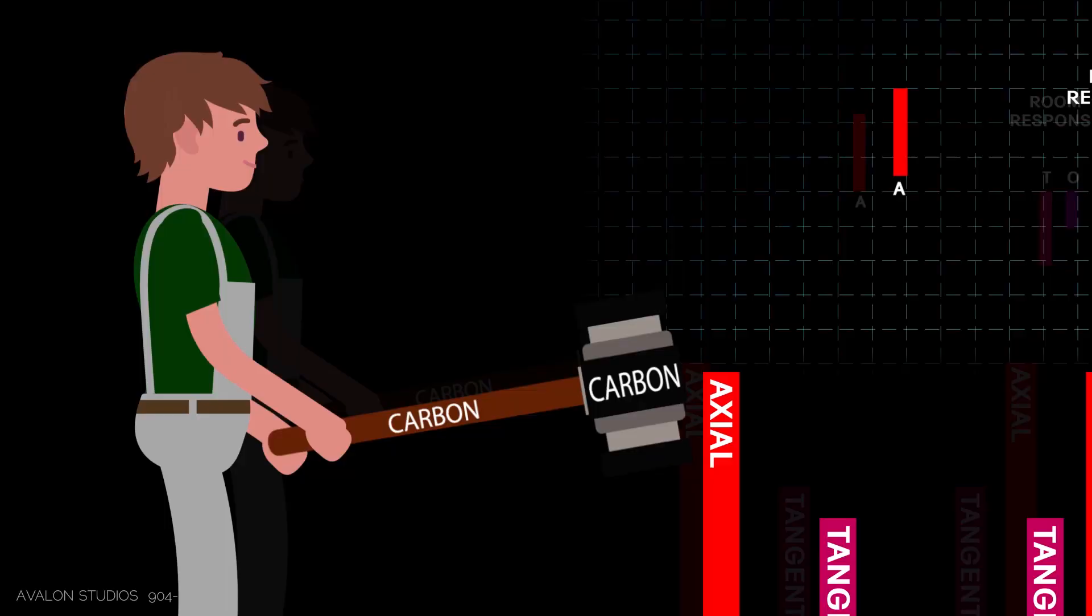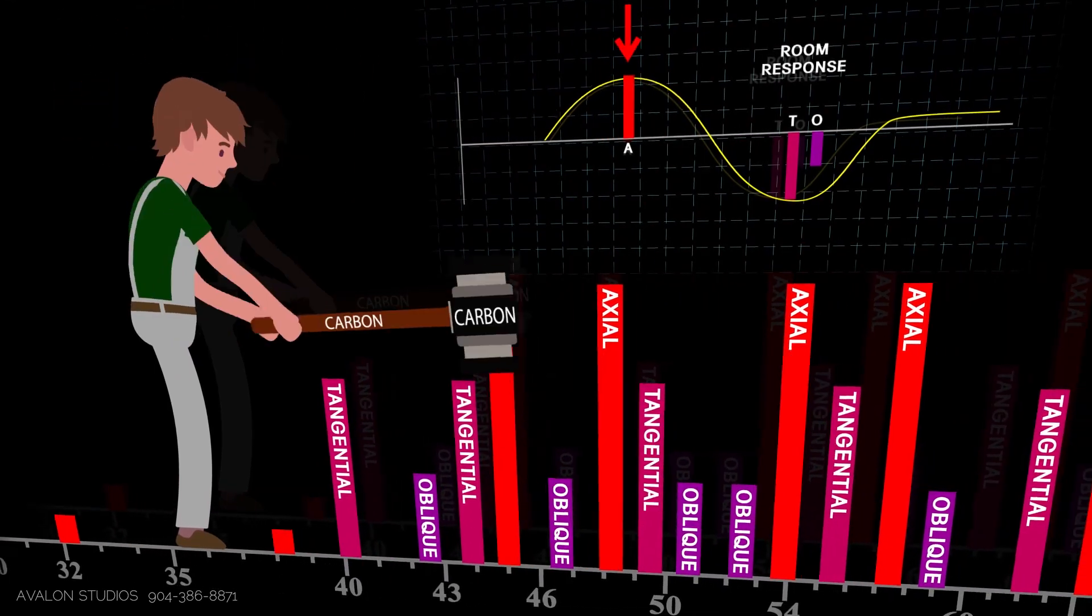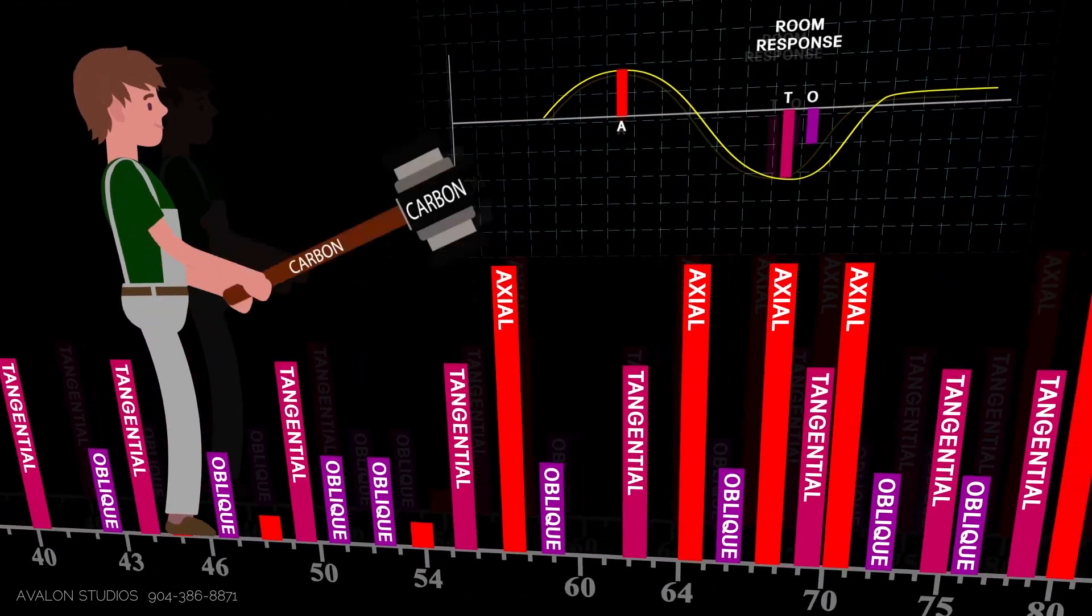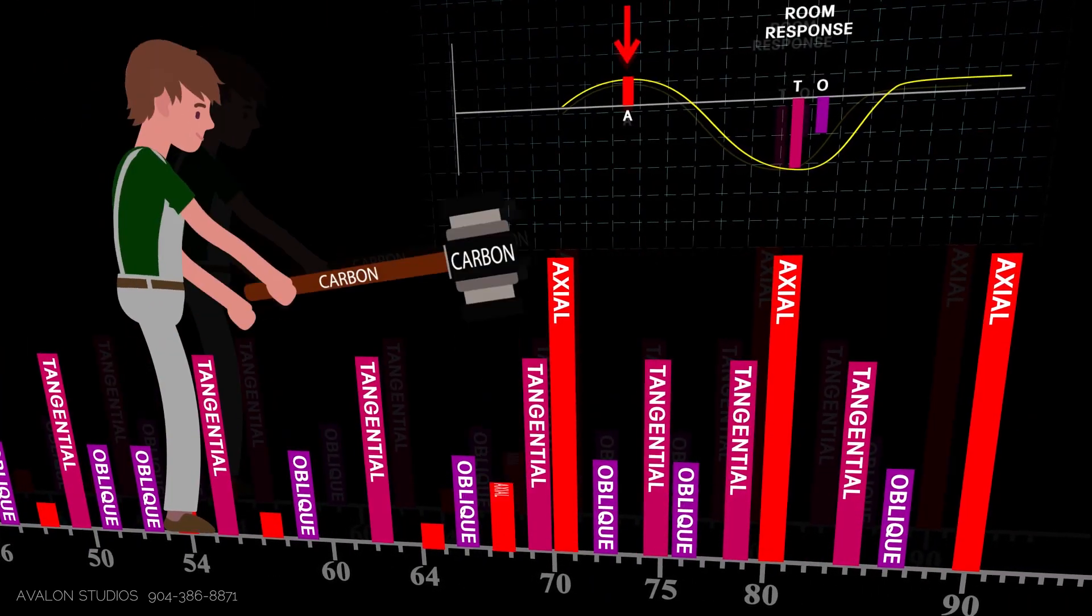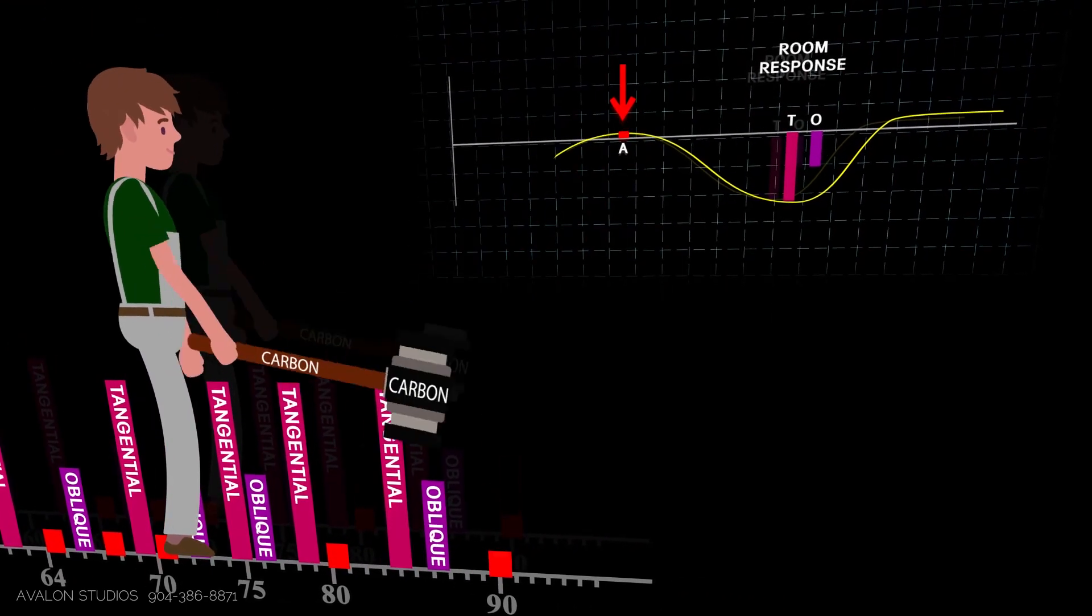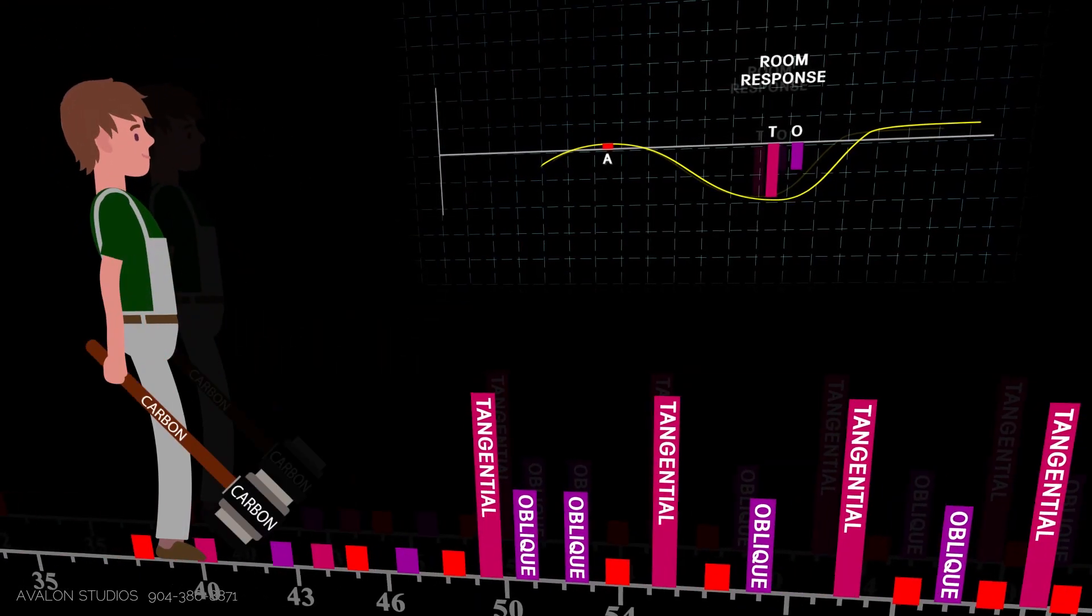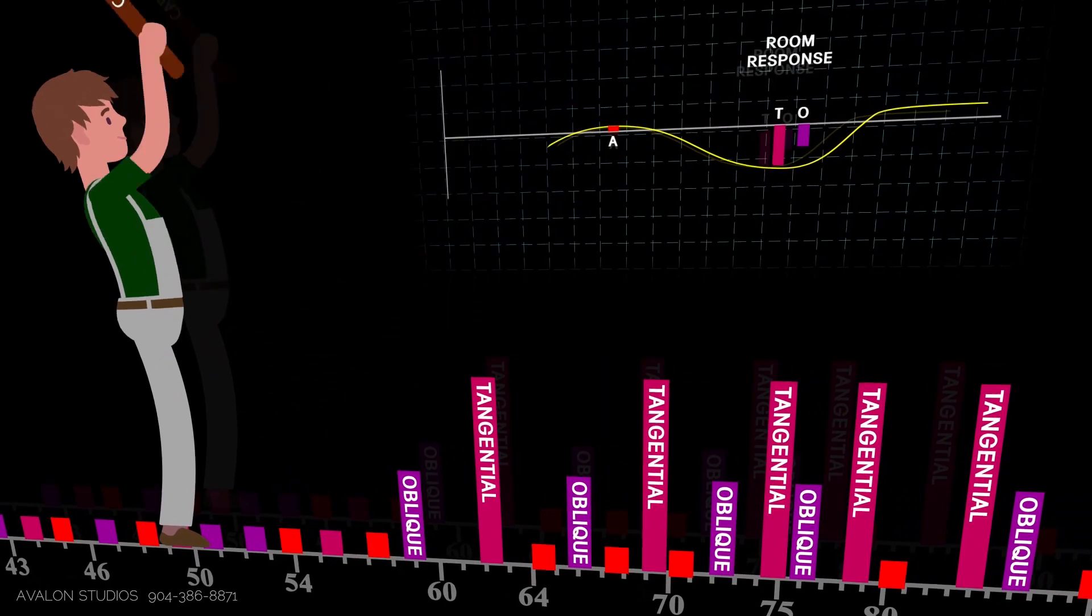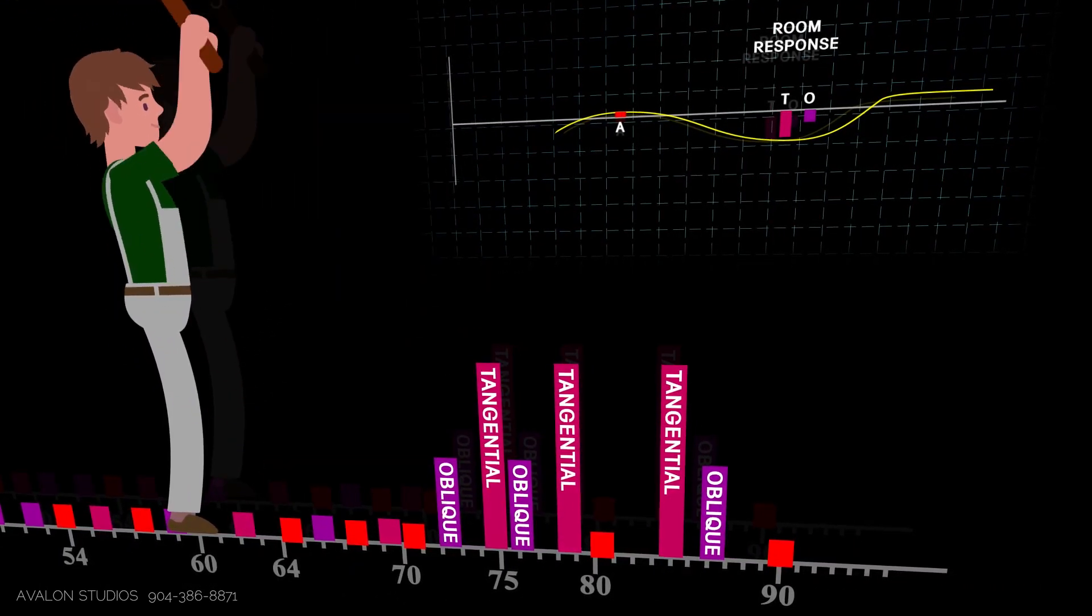So you can see the character in the animation is taking our carbon hammer, I thought you'd like that one, and pounding down the axial modes. And then notice the frequency response curve as he does it because axial modes have a direct impact on that big peak that we all have in our rooms below 100 cycles. Looks like a mountain and then it goes like a mountain and then after 100 it starts to dip and then goes back up again above baseline.